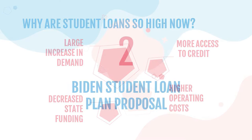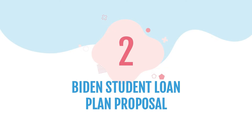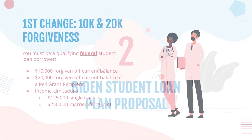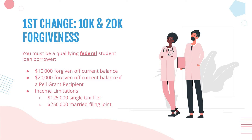Section two — what's mostly in the news now — is the proposed student loan plan by the current administration. There have been three big changes.